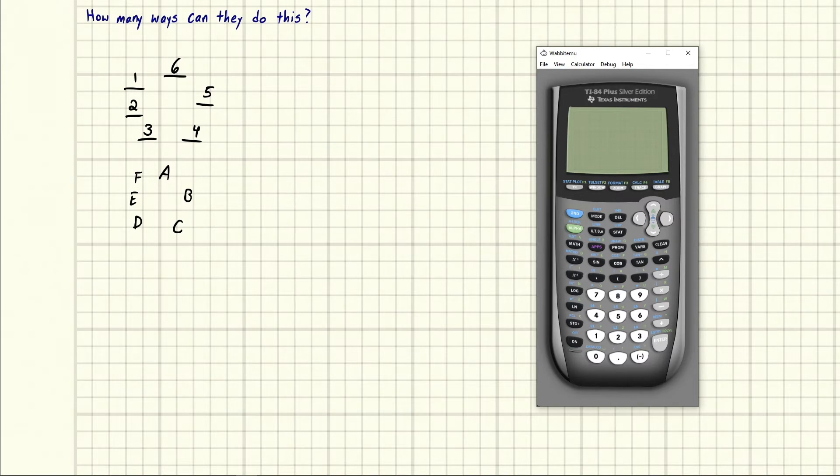Well, what if I were to rotate everyone by one seat? So where A is, F goes, and then we have A, B, C, D, E, F. So look at this.